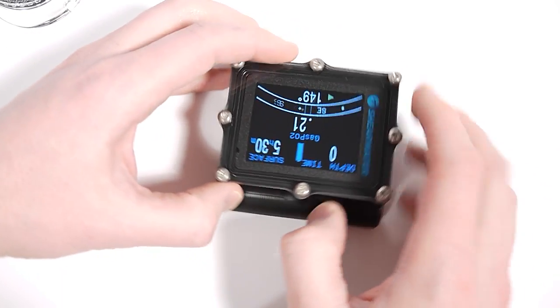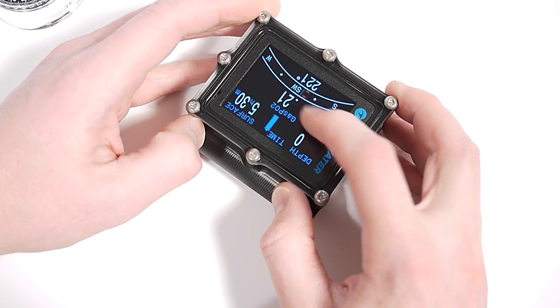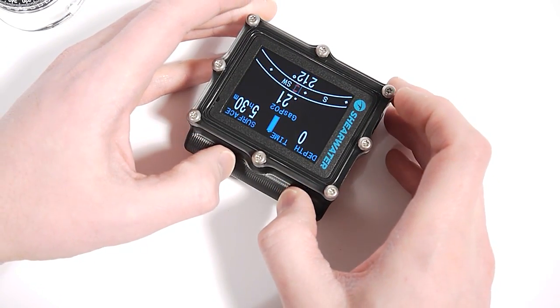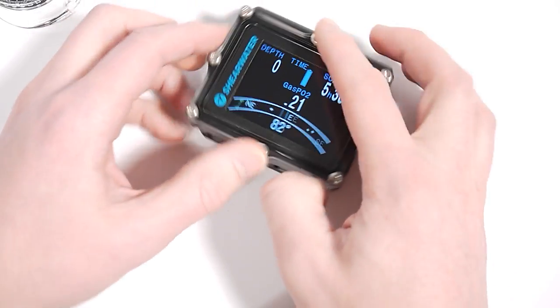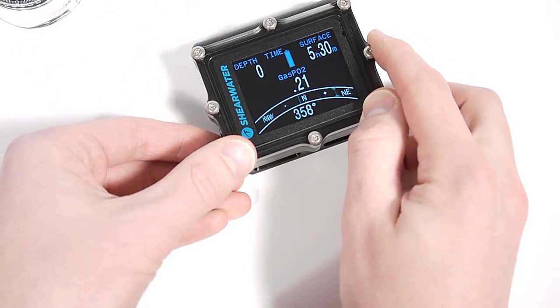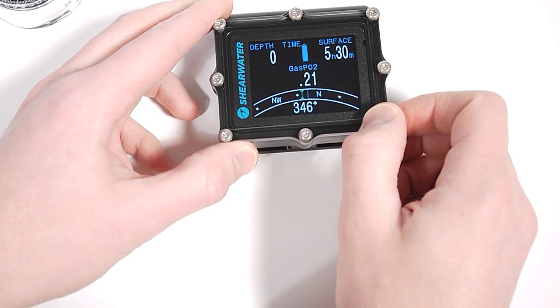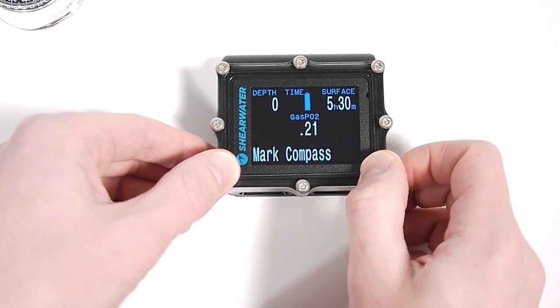Or if I go 180 degrees from my marked heading, you'll see the reciprocal heading is shown in red to allow me to navigate back the way I came. I can mark a new heading, but you can only have one heading marked at a time. It's meant to be a simple, easy to use function without a lot of extra complexity.